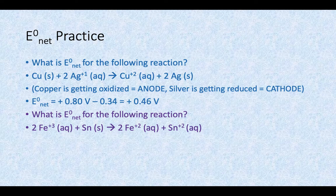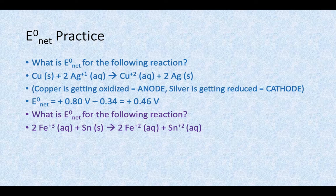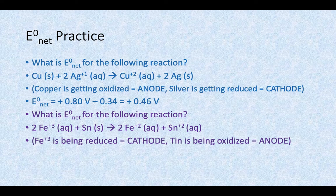That means it's getting reduced, it's taking place at the cathode. Your tin is the one who's losing electrons, going from neutral to positive 2. It's happening at the anode.